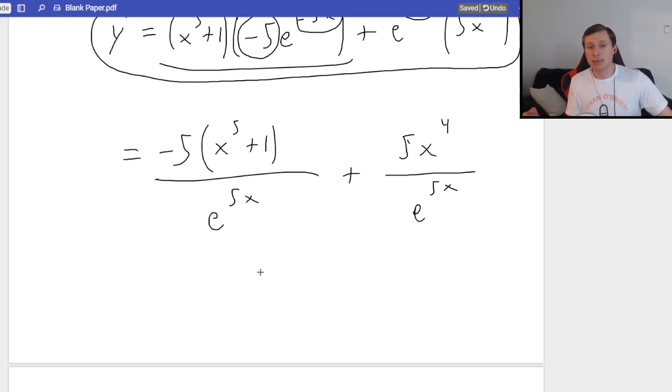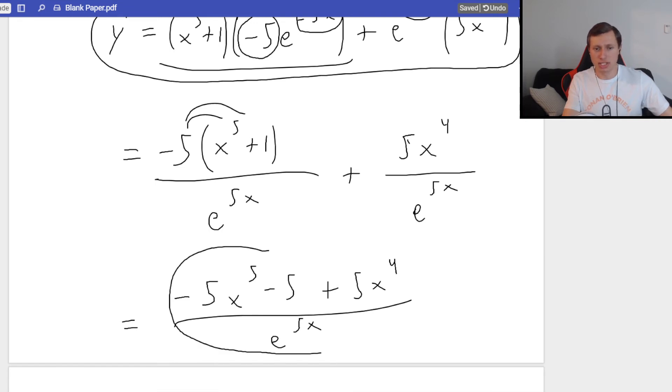Then, plus, there's going to be another fraction bar because I see the negative exponent. In my numerator, I just have 5x to the 4th. My denominator is e to the 5x power. You see that we have the same denominator here. If we wanted to, we could write this under just one fraction bar. So my numerator could be negative 5. I'll even distribute this negative 5 to both terms because I can do that too. Negative 5x to the 5th minus 5 plus 5x to the 4th. All of that is divided by e to the 5x.